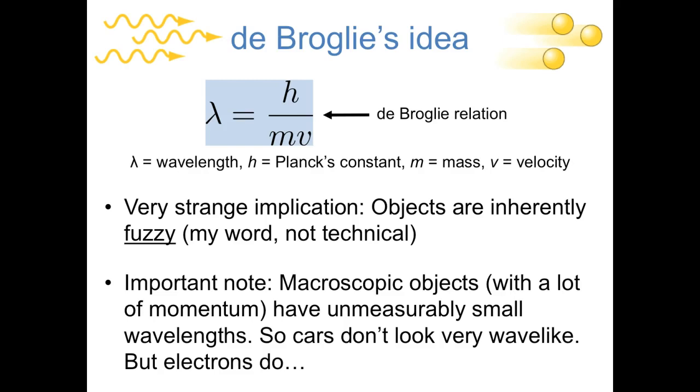But in quantum mechanics, we're not thinking about cars, we're thinking about electrons. And electrons are really small. So for electrons, which have very, very small momenta, their wavelength, the uncertainty in where they are, is comparable to the size of an atom. So for electrons, the idea of a particle-wave duality of matter becomes really important.